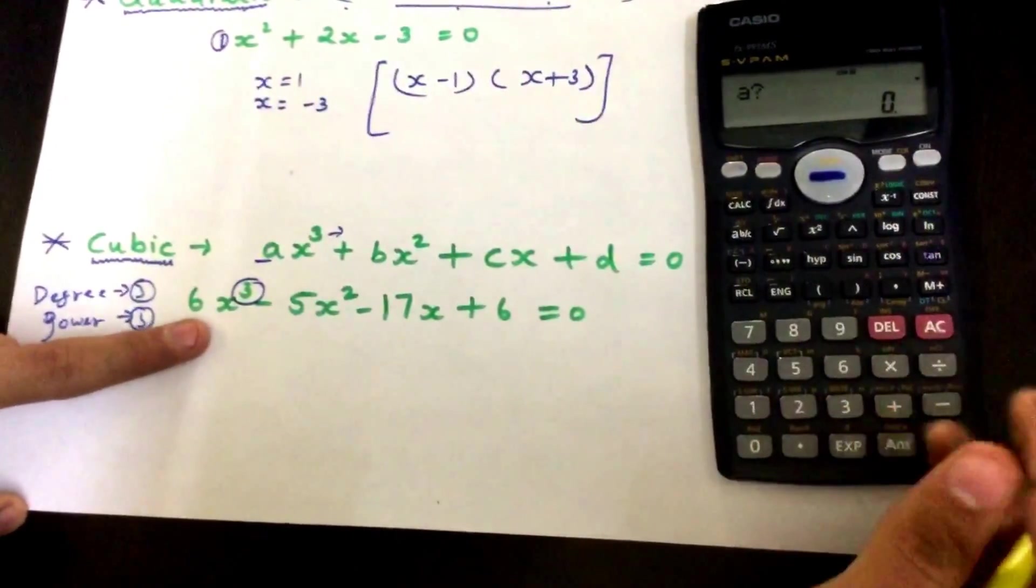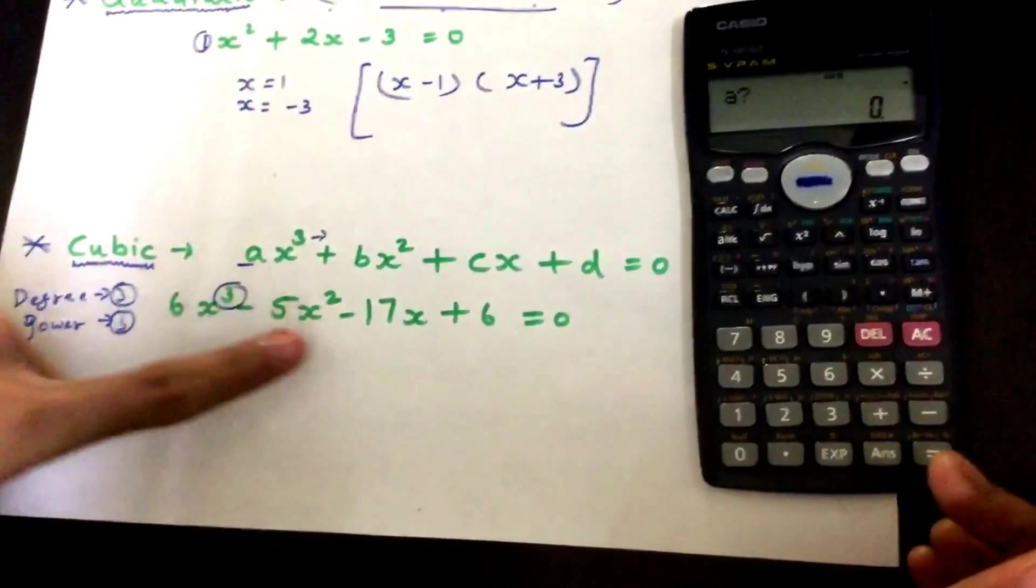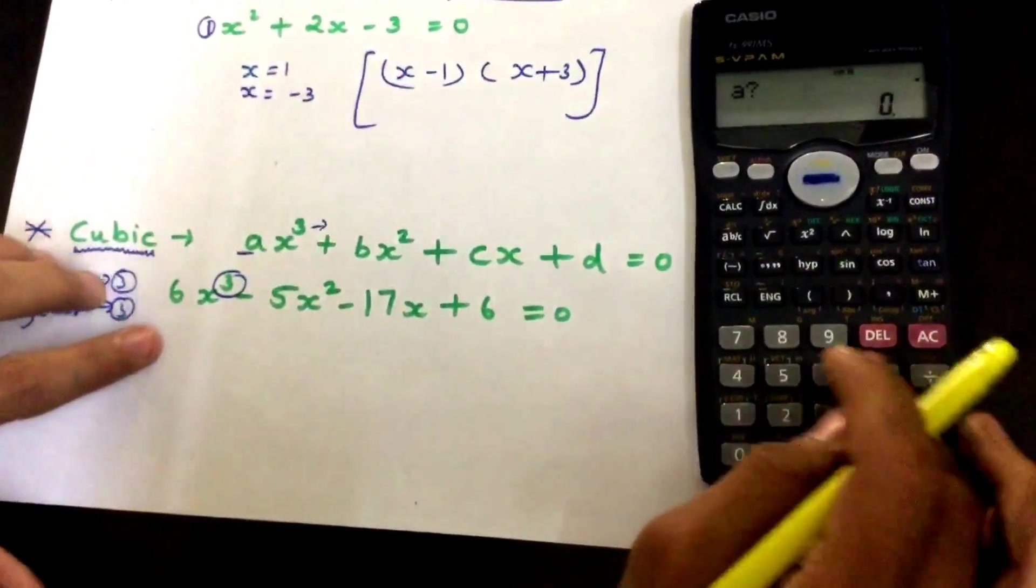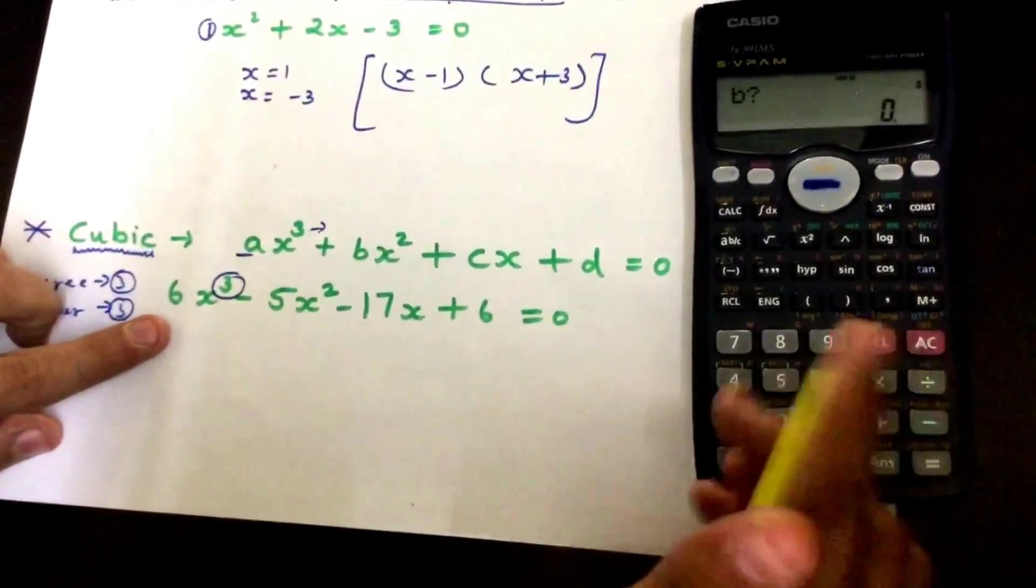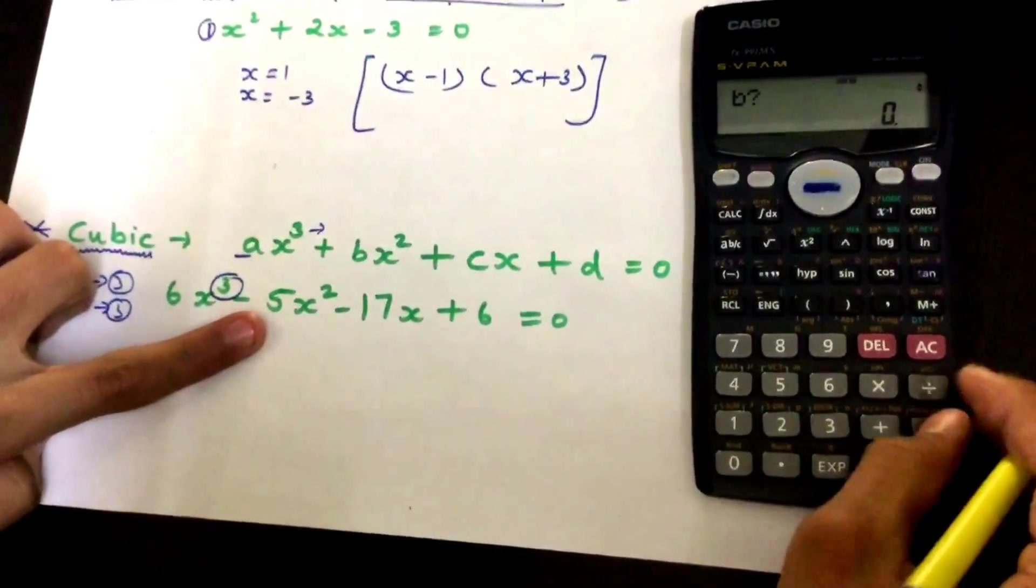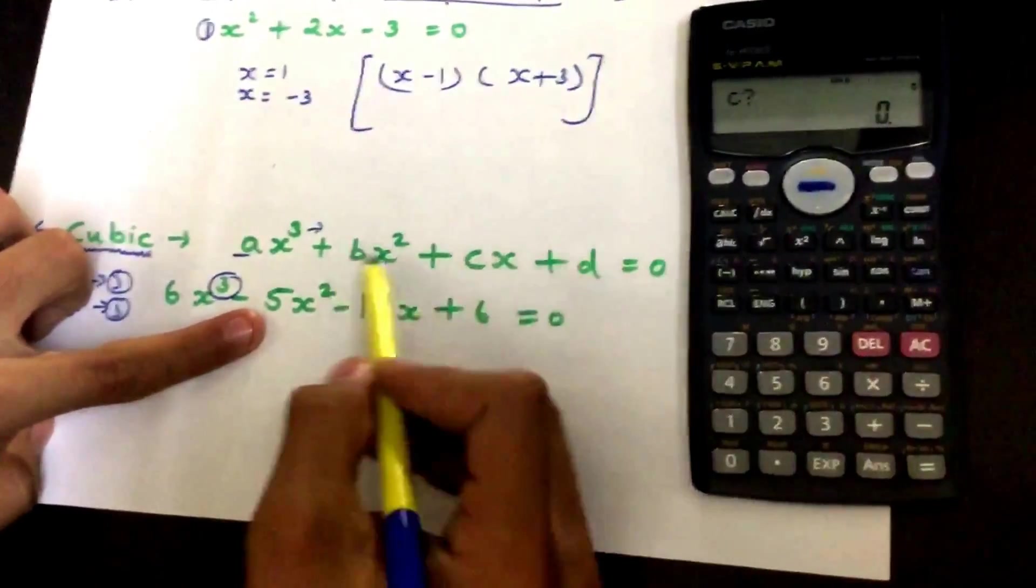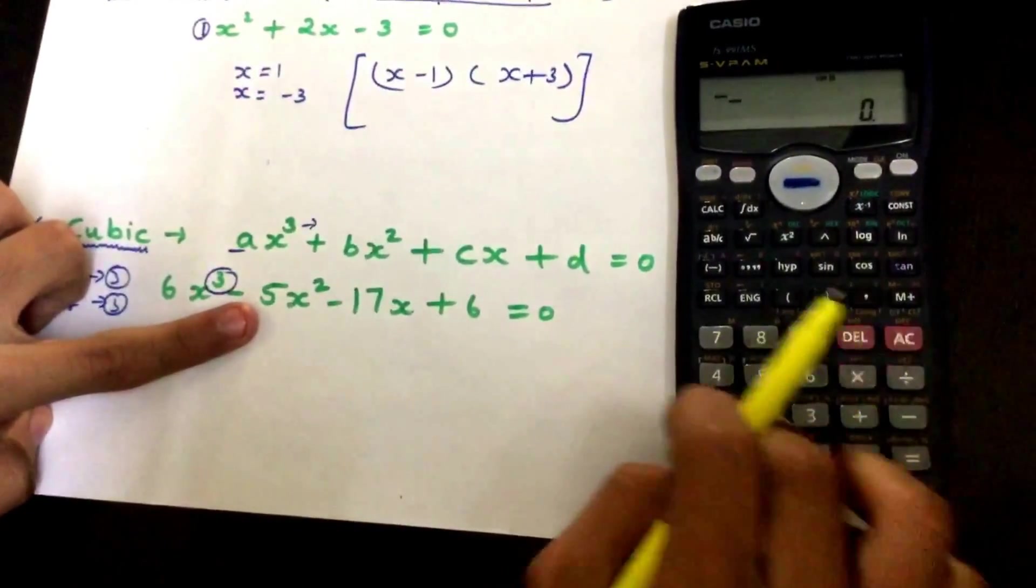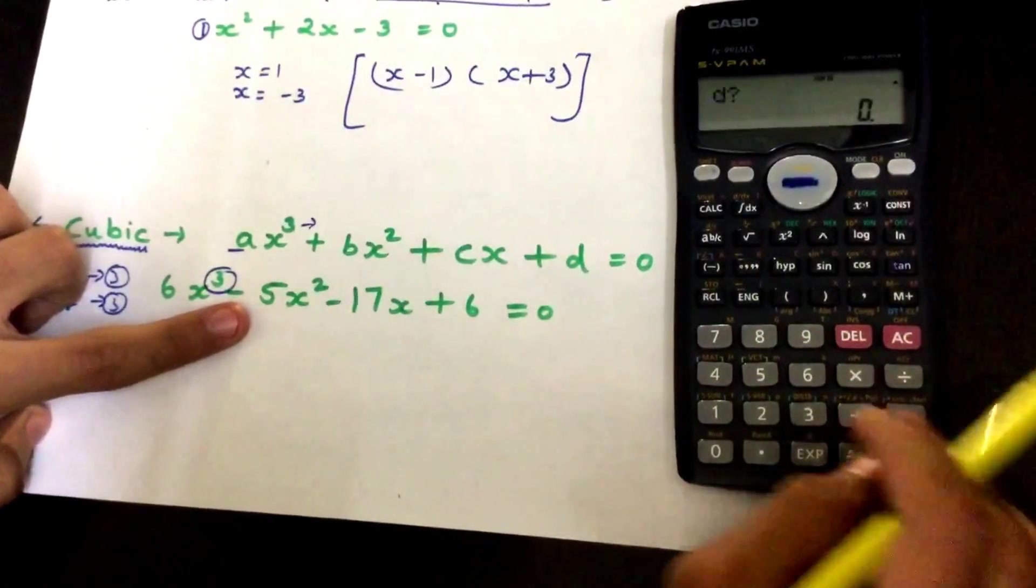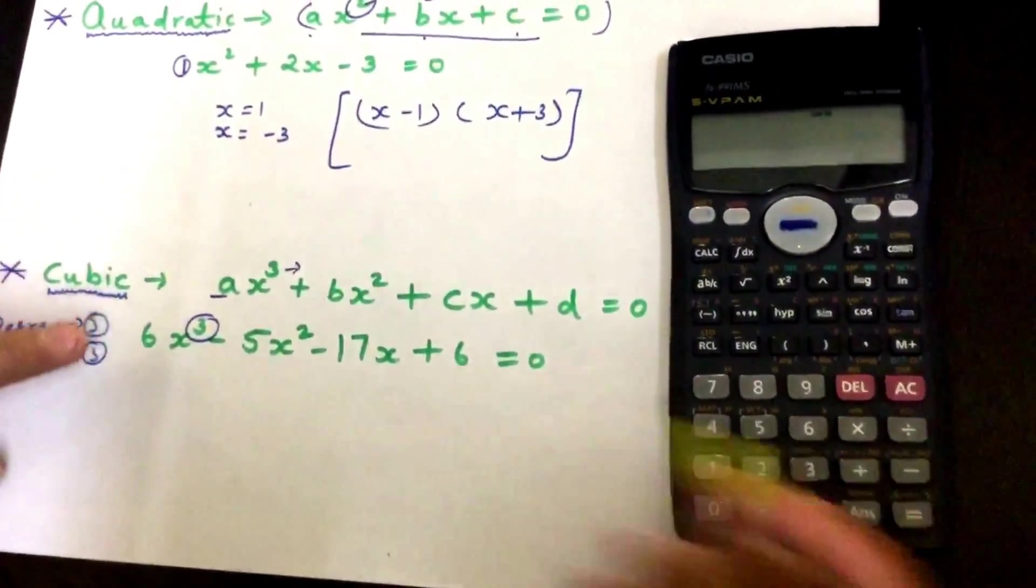Let's put first a, which is 6, b which is minus 5, c which is minus 17, and d which is 6.